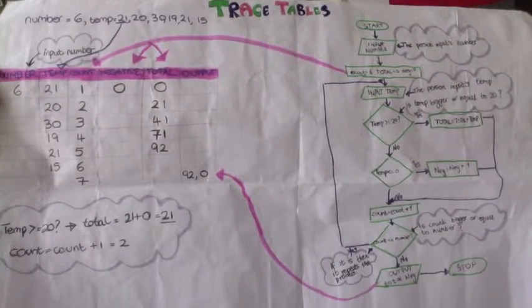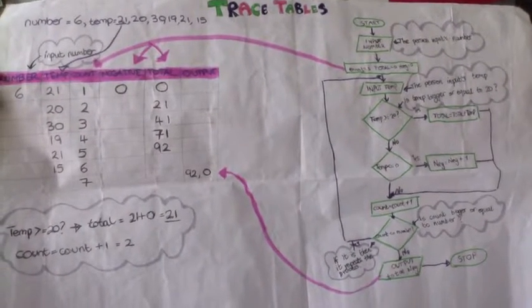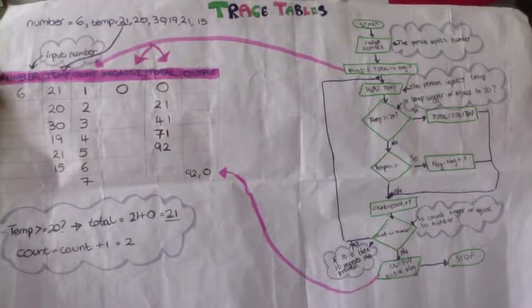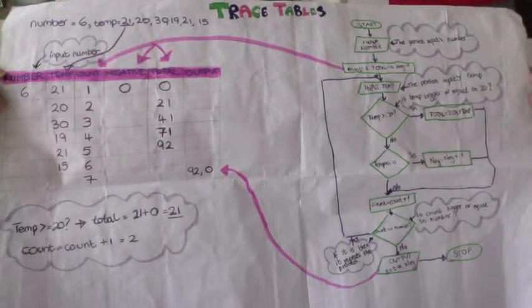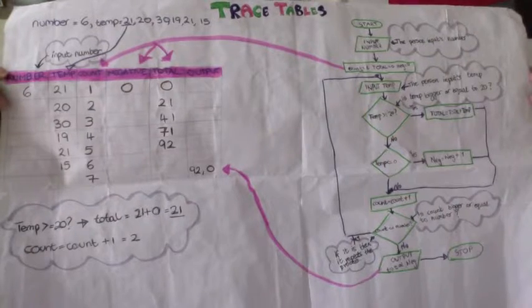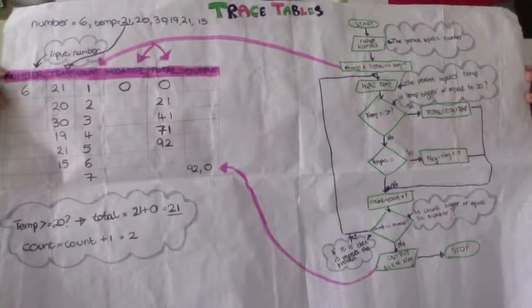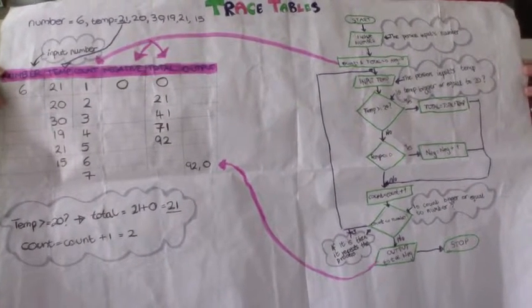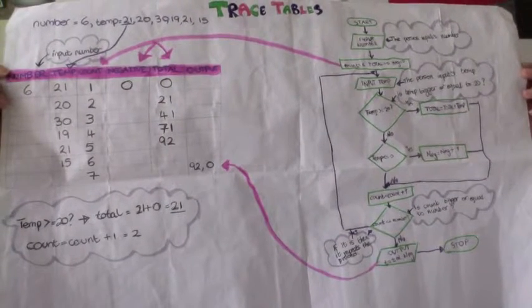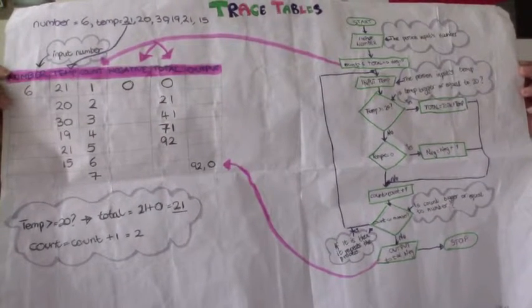Then it tells you that count equals count plus 1 and 1 plus 1 would be 2. Then it asks you if count is smaller than or equal to number. Because it's 2, it is smaller than or equal to number. So it goes all the way back on top and repeats the process all over again until you output the final answer.